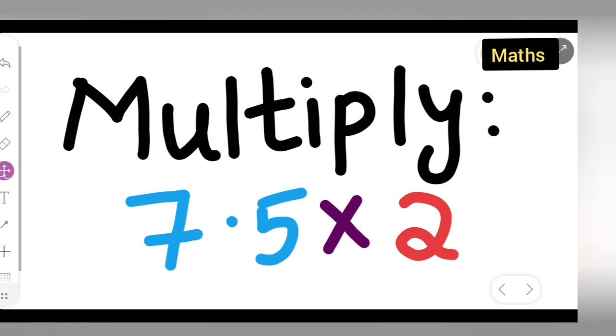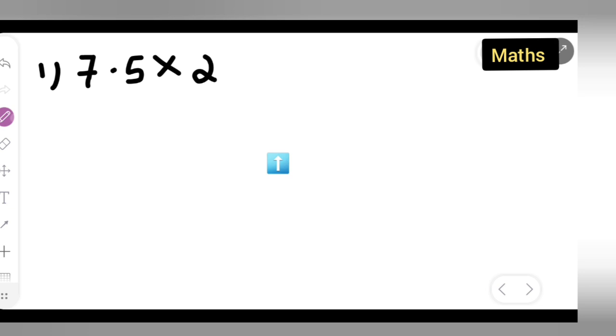So let us see how to multiply 7.5 multiplied by 2. Let us multiply this. Let us remove the decimal point. First write down in stepwise order, multiplied by 2.